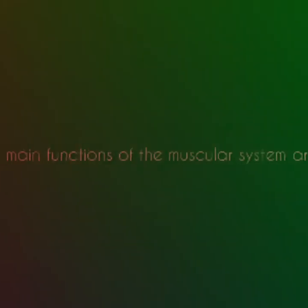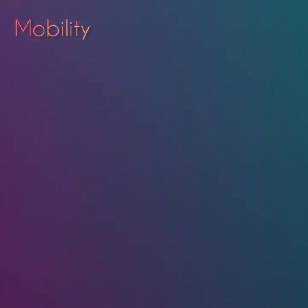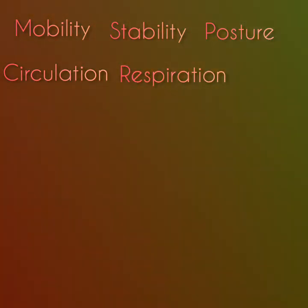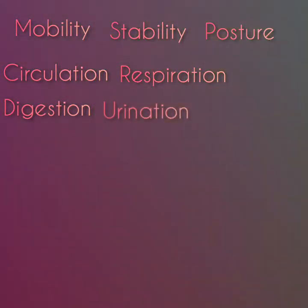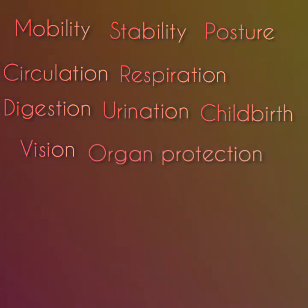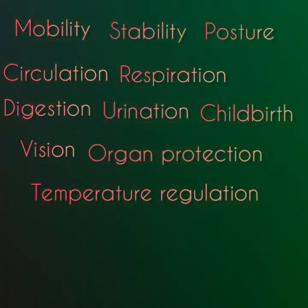The 11 main functions of the muscular system are: mobility, stability, posture, circulation, respiration, digestion, urination, childbirth, vision, organ protection, and temperature regulation.